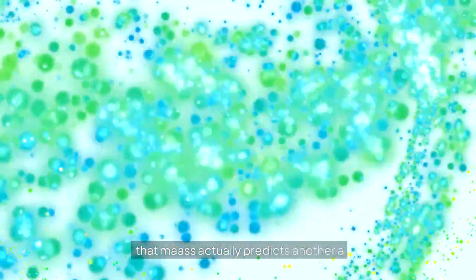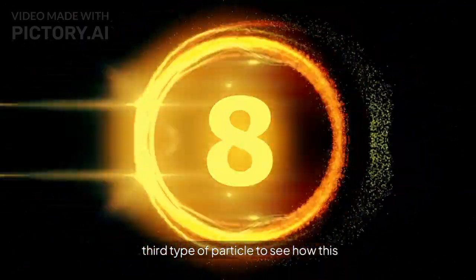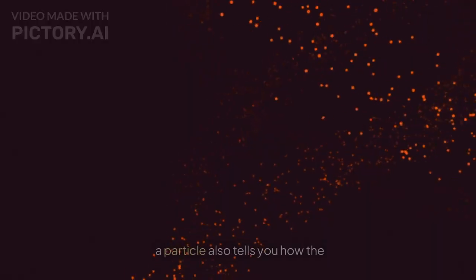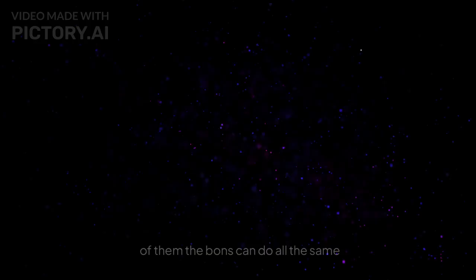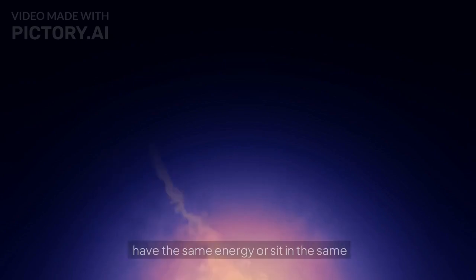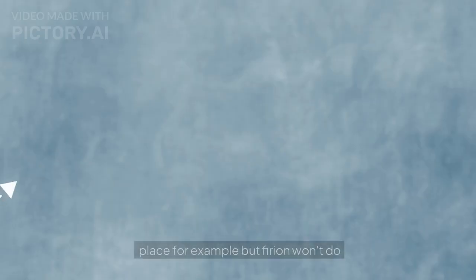To see how this works, you need to know that the spin of a particle also tells you how the particles behave if you combine several of them. The bosons can all do the same thing at the same time, like they can all have the same energy or sit in the same place, for example.